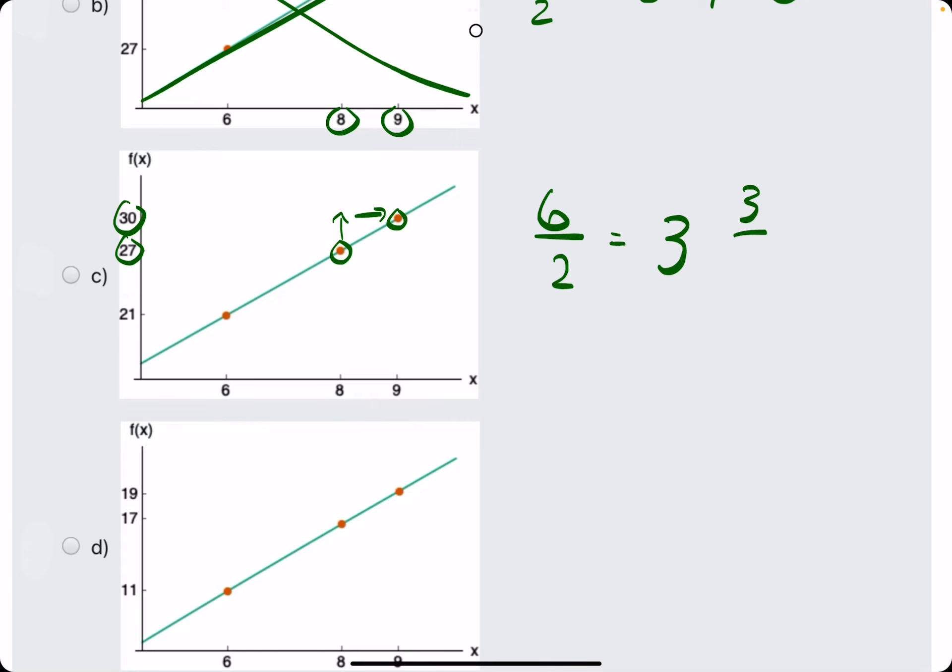And a run from 8 to 9 of 1. 3 over 1 is in fact equal to 3.